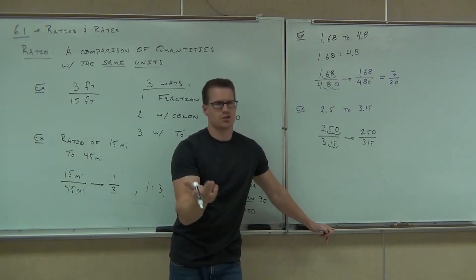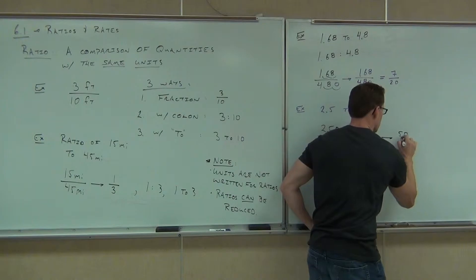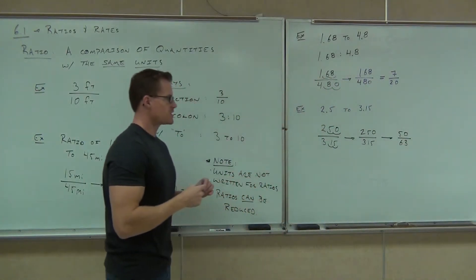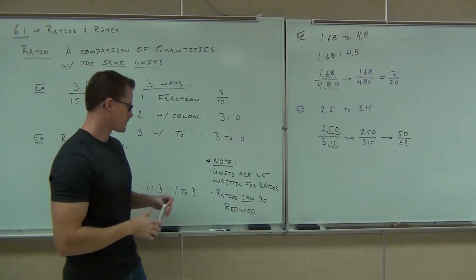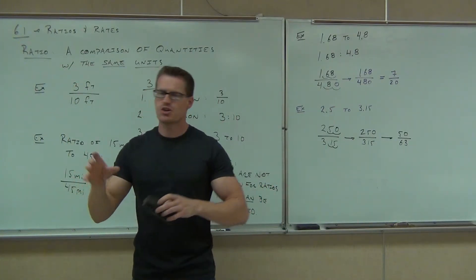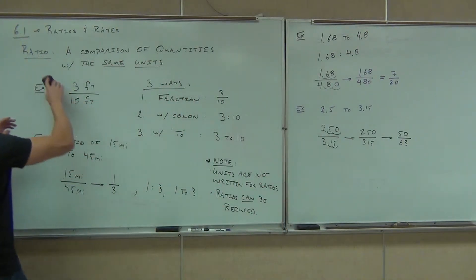Could you find it by hand? Sure, it's going to take you longer. So our ratio is 50 to 63. Now, there's one more thing we've got to talk about ratios. We're going to look at how to find a ratio between mixed numbers, which is kind of interesting. It's going to bring up some old stuff for us, then we'll talk about rates.